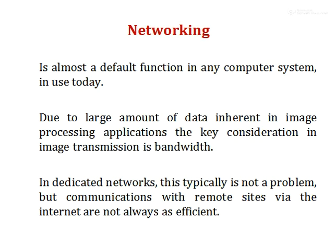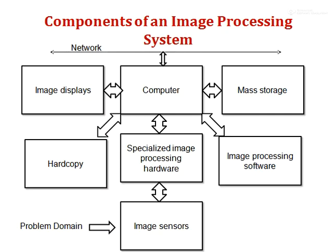To summarize, the general block diagram of components of an image processing system consists of image sensors, specialized image processing hardware, computer, image displays, mass storage, hard copy, image processing software, and finally they are all connected with a network. Thank you for watching this video.